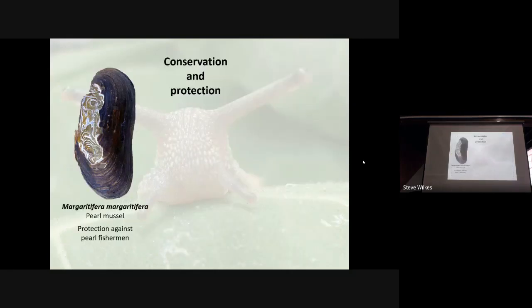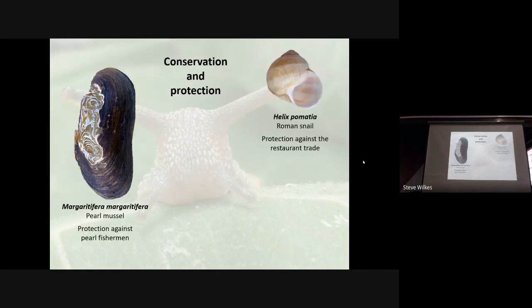One of the things you're obviously interested in here is conservation and protection. Although this isn't a snail — it's a bivalve, a pearl mussel — it's still a mollusk. It's one of the things that our society and many others are particularly interested in, because it is now an exceedingly rare shell. Its population has suffered dramatically from pearl fishermen, and it is now highly protected. Many of the sites are not disclosed publicly. But there are plenty of other species where protection is in place.